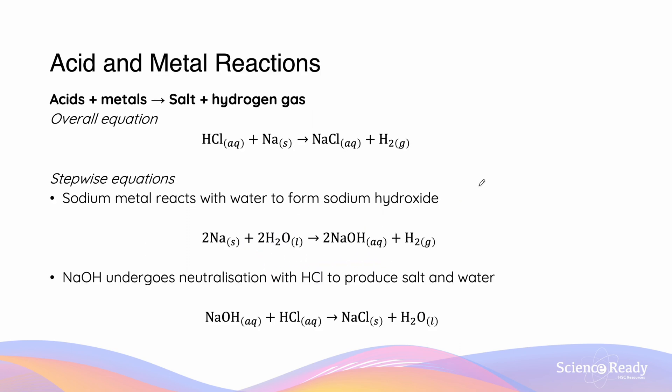When an acid reacts with a metal, we get the formation of salt and hydrogen gas. Here we have the reaction between sodium metal and hydrochloric acid to form the sodium chloride salt and hydrogen gas.